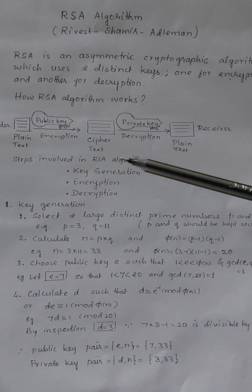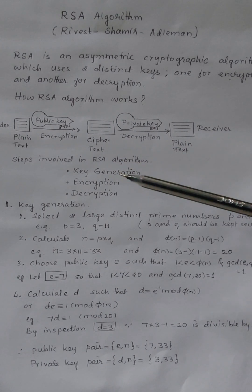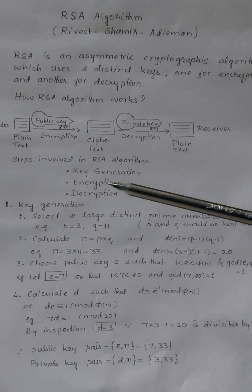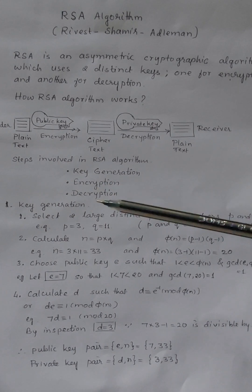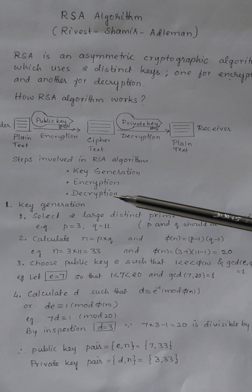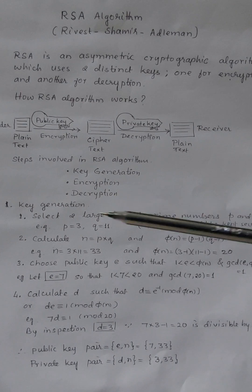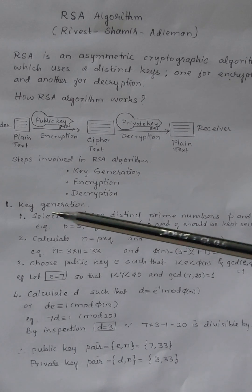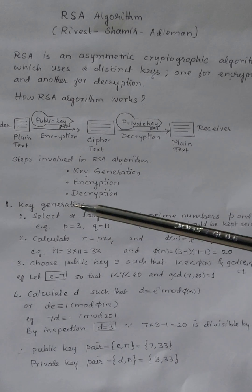The steps involved in RSA algorithm are: key generation, encryption of the plain text, and decryption of the ciphertext. Now let's look at how to generate the public and private keys.